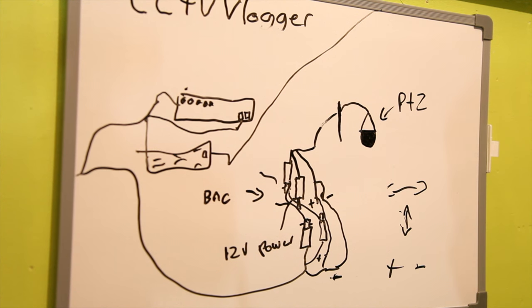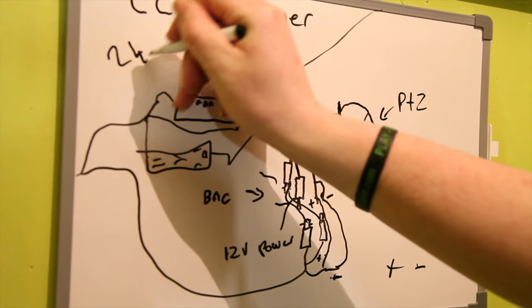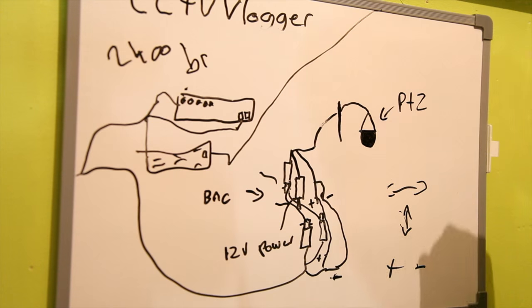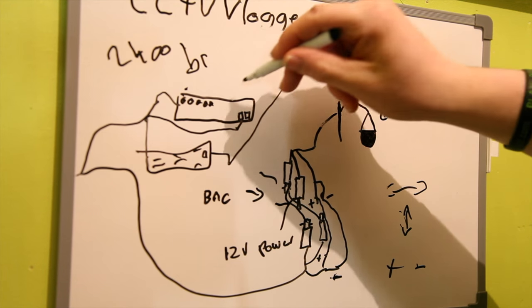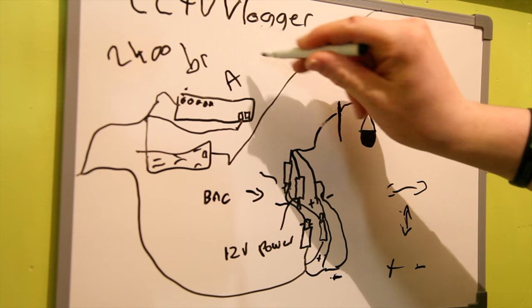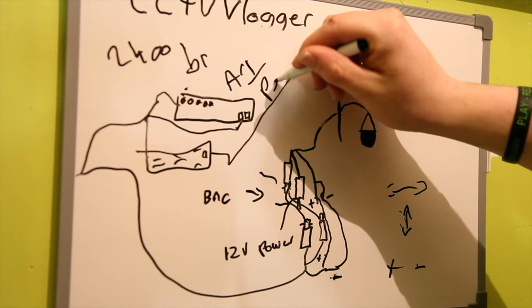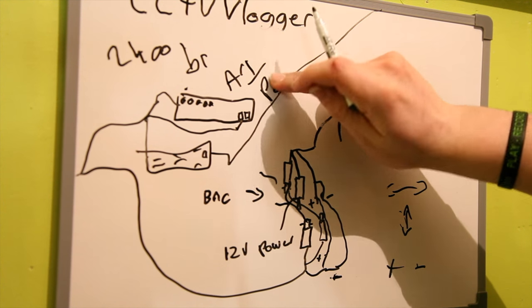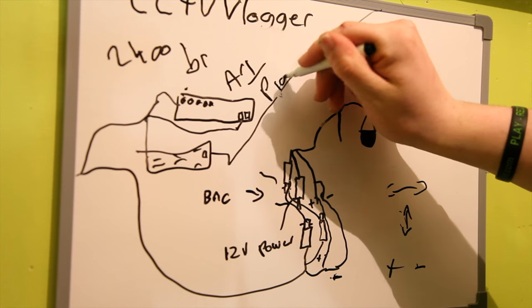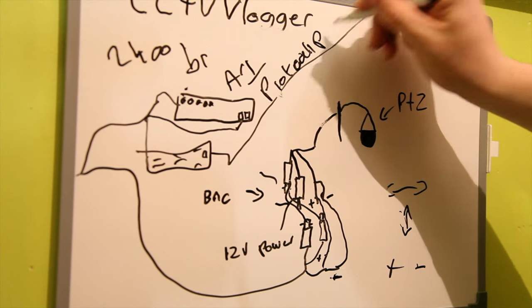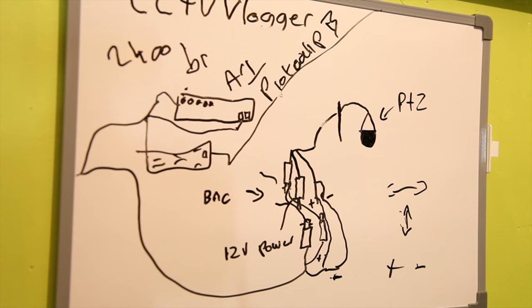And on there, you set the protocol, which is probably 2400, so put 2400. And then baud rate - that's the baud rate. And the address - that's the address, so address of one. The protocol is probably P. There's P and there's B, I think.